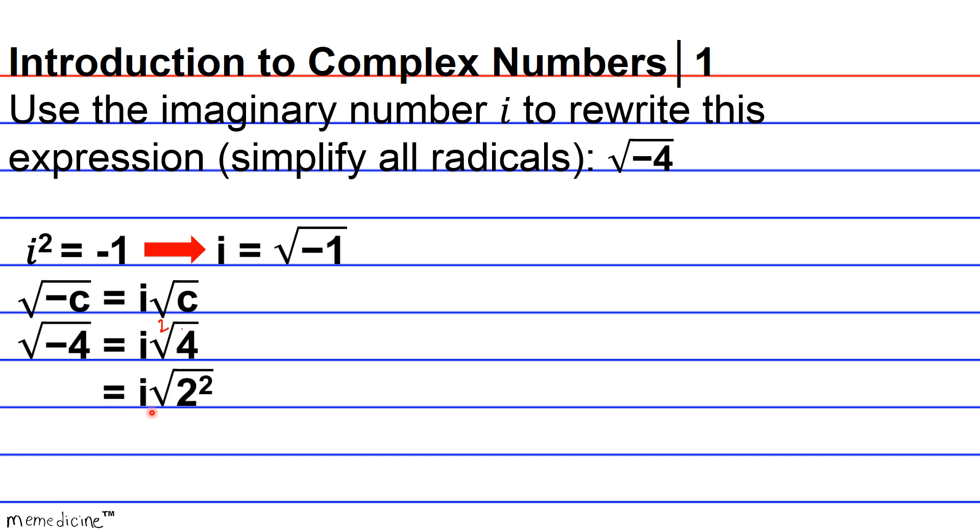So this is equivalent to i radical 2 squared. And at this point, we can simplify to 2i, because when you take the square root of a square, you're left over with the base of the exponential expression, or the numeral of the radicand.